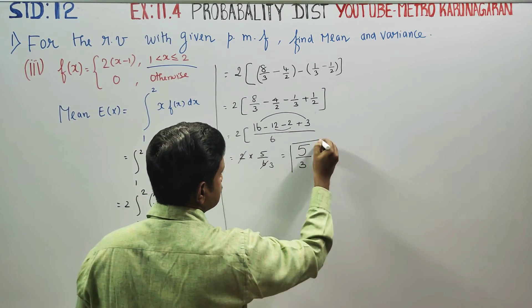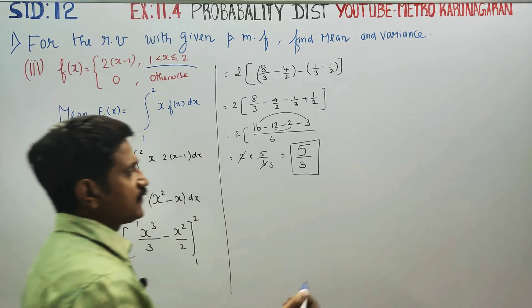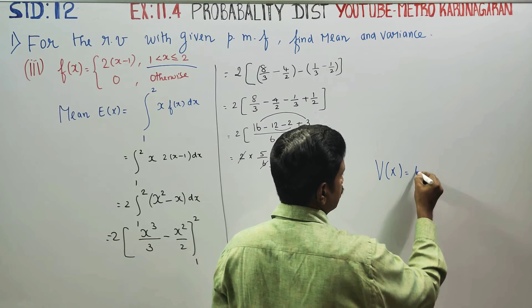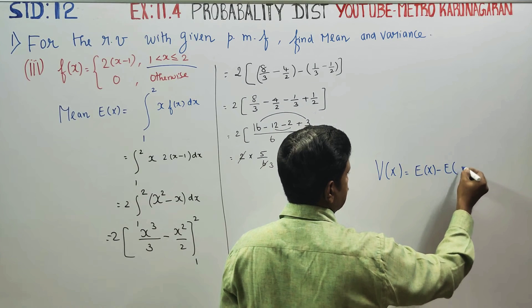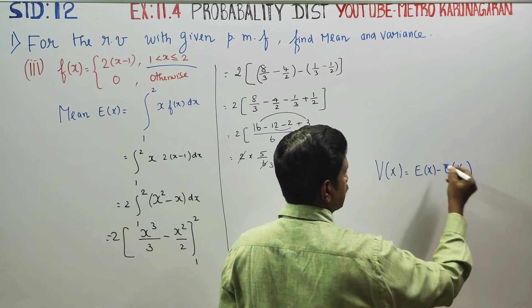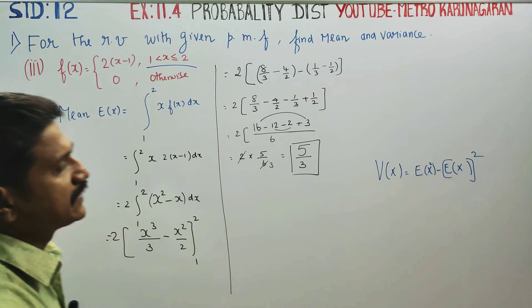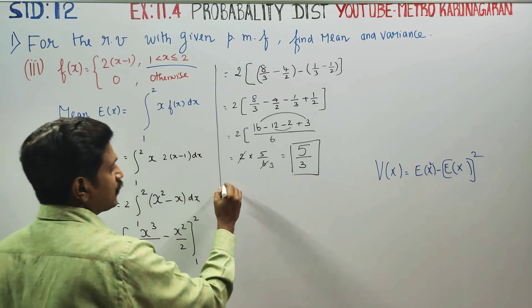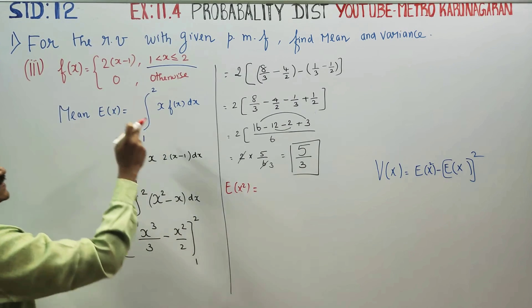Expectation of x, after finishing our mean expectation, we are entering into variance. For variance, the formula is V of x equals expectation of x square minus expectation of x whole square. For expectation of x square, we proceed.